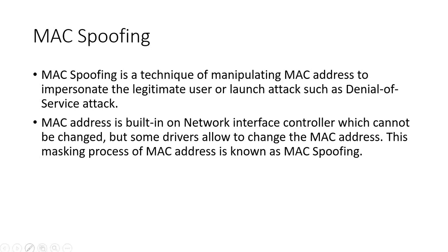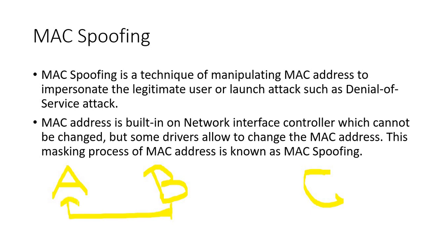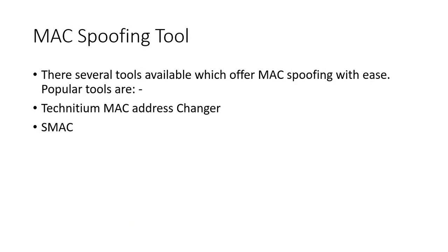Let's take an example to understand. Let me take the highlighter. Let's say the MAC address of A — this is the attacker — and the user is B, and the receiver is C. Now what is happening is this user's MAC address is spoofed by the attacker. The attacker is then using this MAC address to attack on something. This is what we call MAC spoofing.